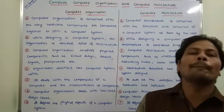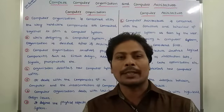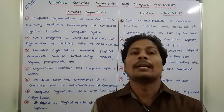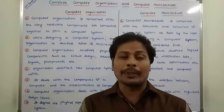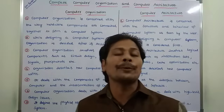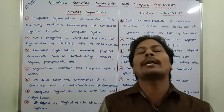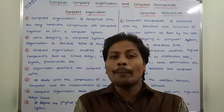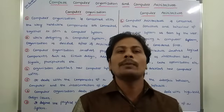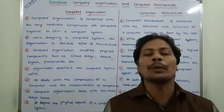Third point: Computer Organization involves the physical components of a Computer System, such as Adders, Subtractors, Signals, Peripheral Devices, and Circuit Design. Whereas, Computer Architecture involves the logical components of a Computer System, such as instruction sets, addressing modes, cache optimization, etc.